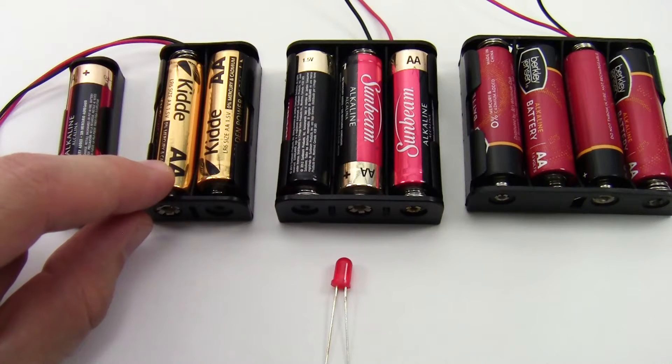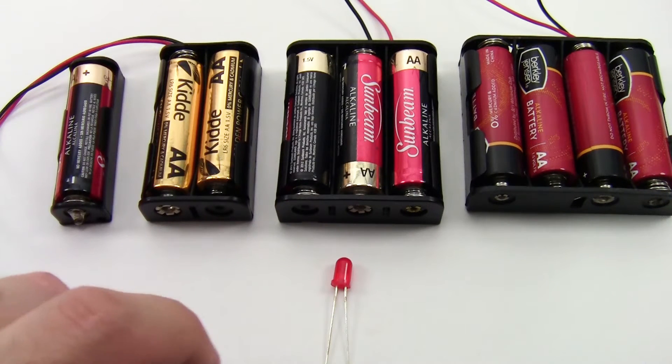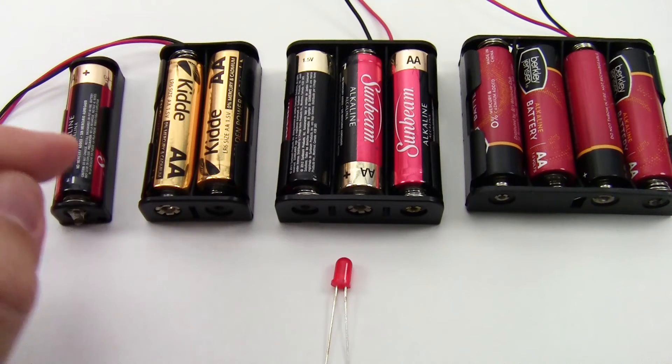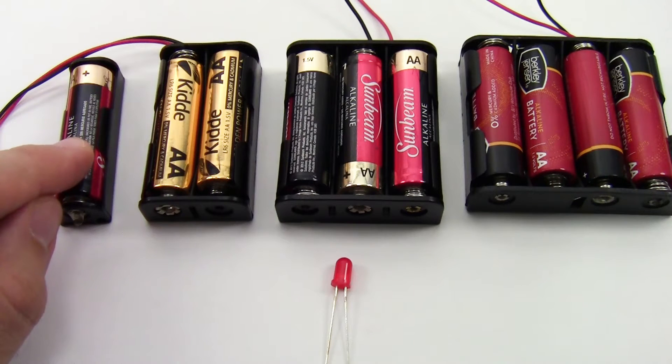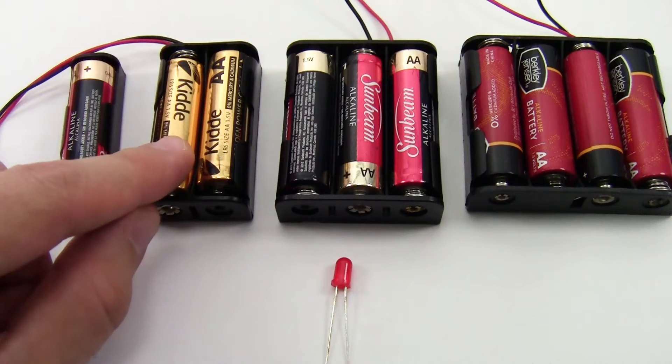I want to choose the voltage that is as low as possible but still higher than the forward voltage drop rating of the LED. So 1.5 volts isn't enough because my LED won't light up. 3 volts is fine.